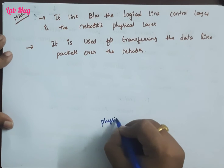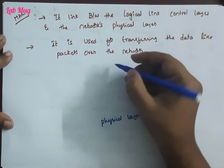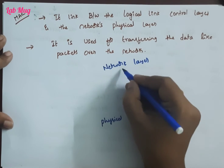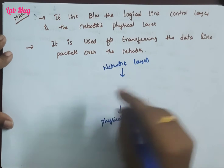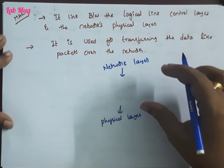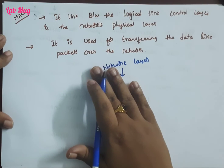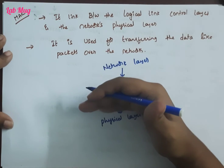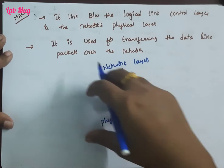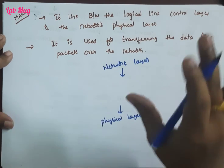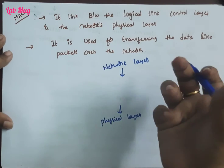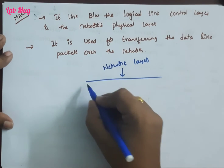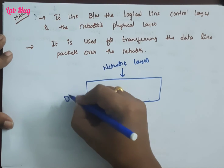The bottom layer is the physical layer and the top layer is the network layer. In the middle, this middle layer is the data link layer. The main thing the data link layer does is dividing packets into frames. In the data link layer, every frame is a key concept. Each packet is divided into frames.